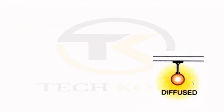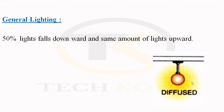Next is general lighting, also called diffused lighting, as mentioned at the start of the classification. It is about 50% of light falling downwards and the same amount going upwards. It is most used in offices with big height. The reflectors are normally made of glass in a globe shape, and they reflect uniform light in all directions.